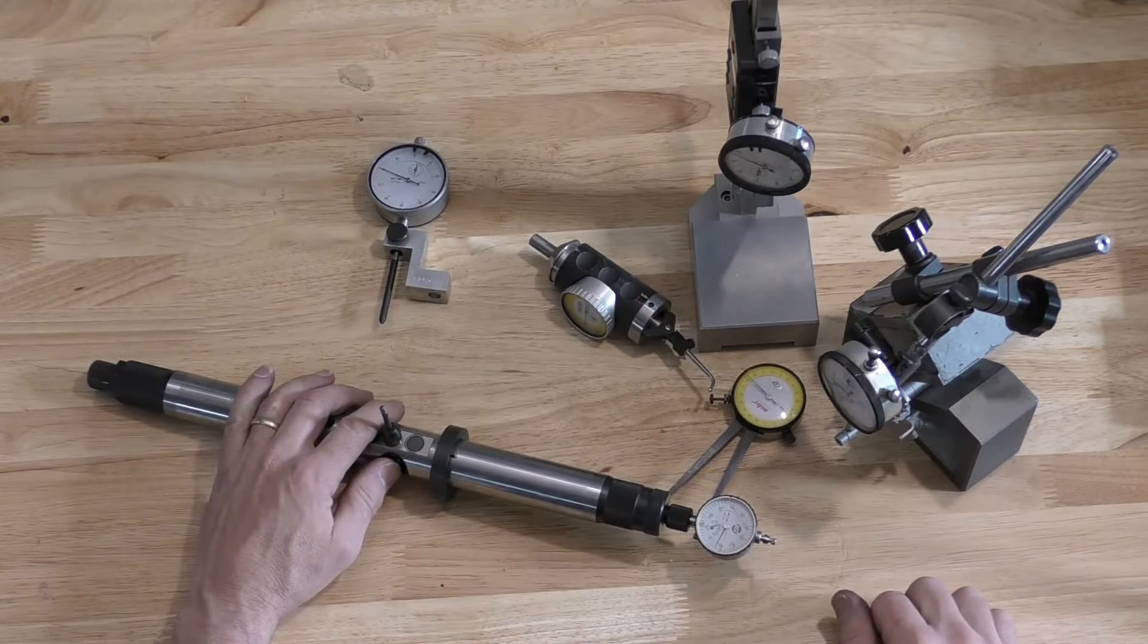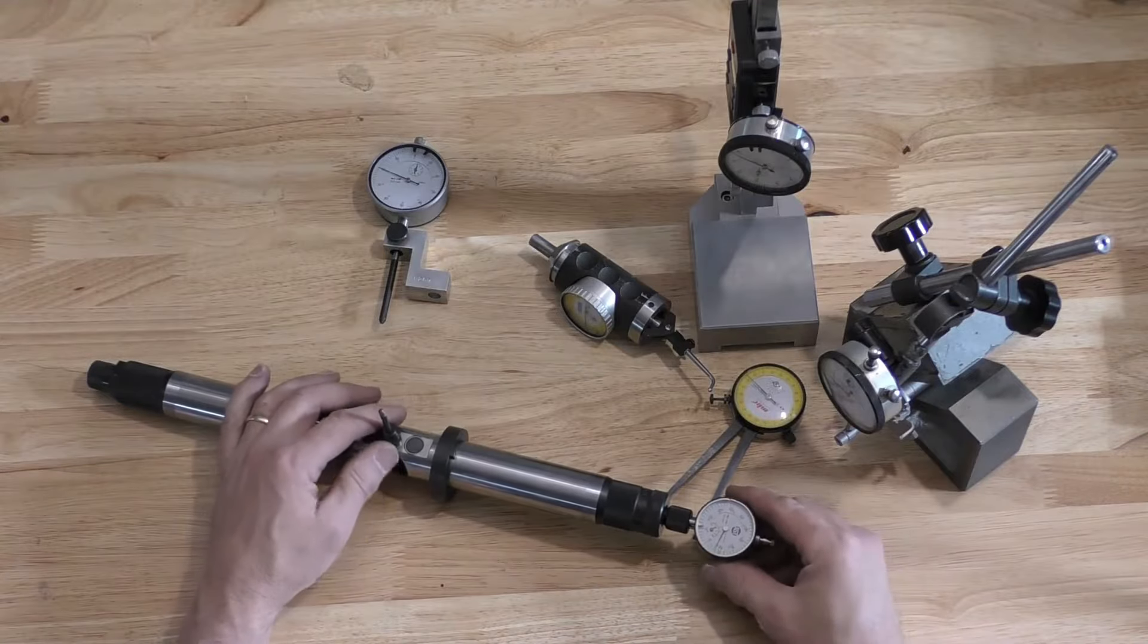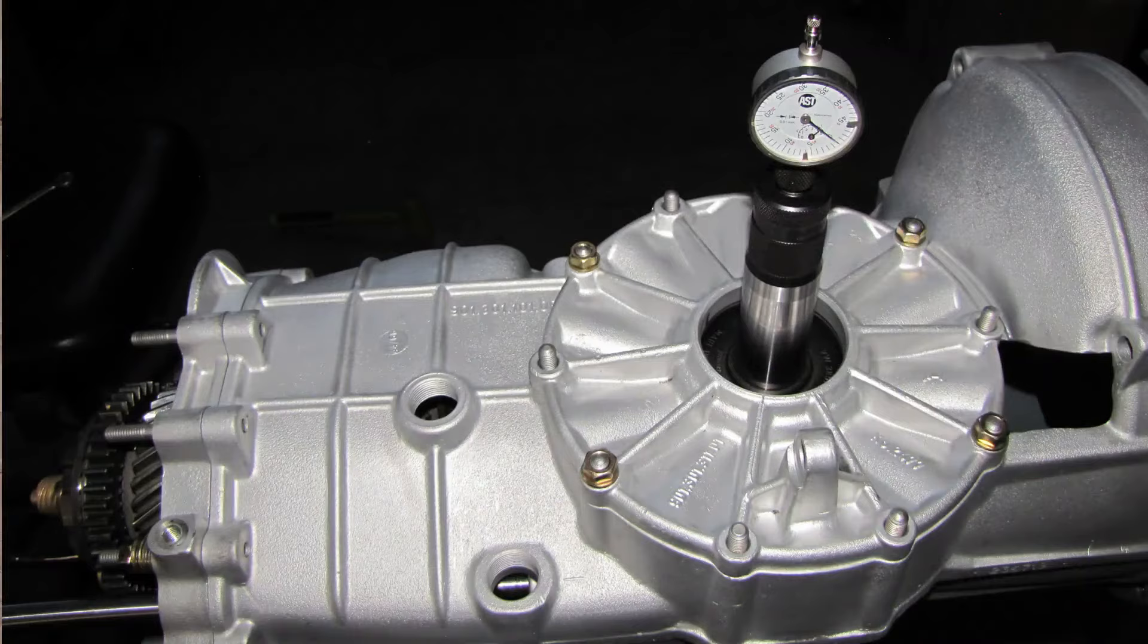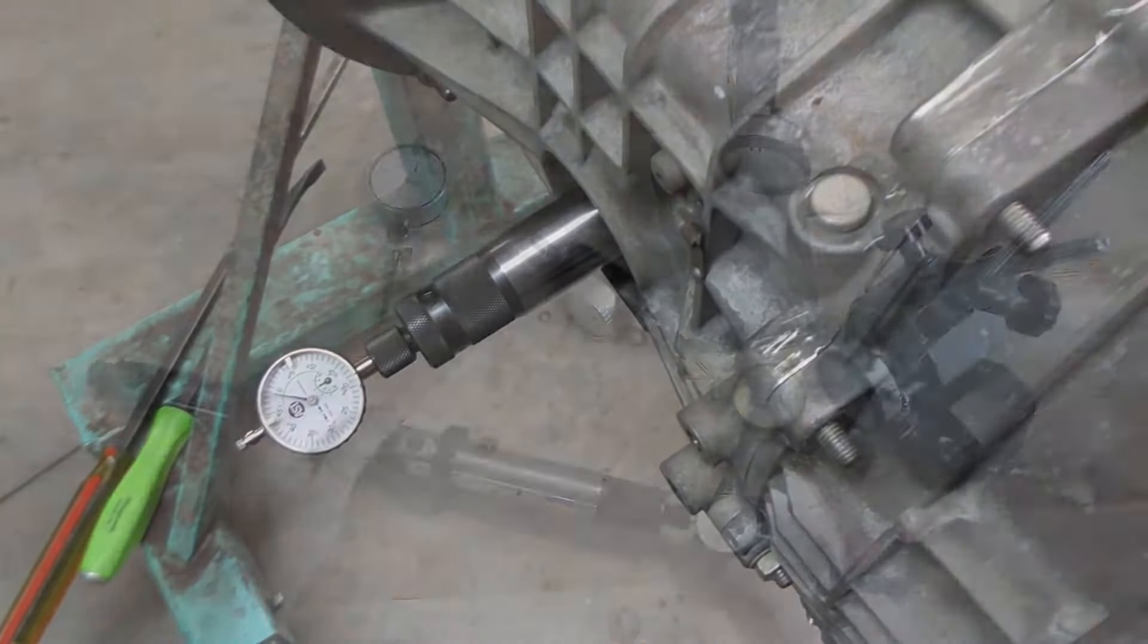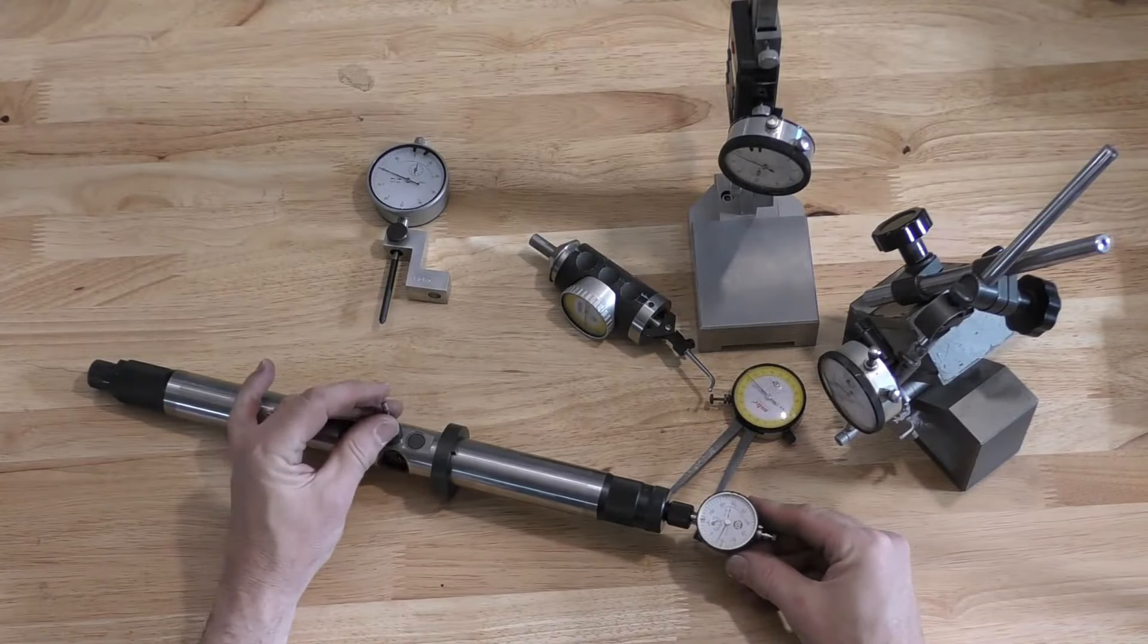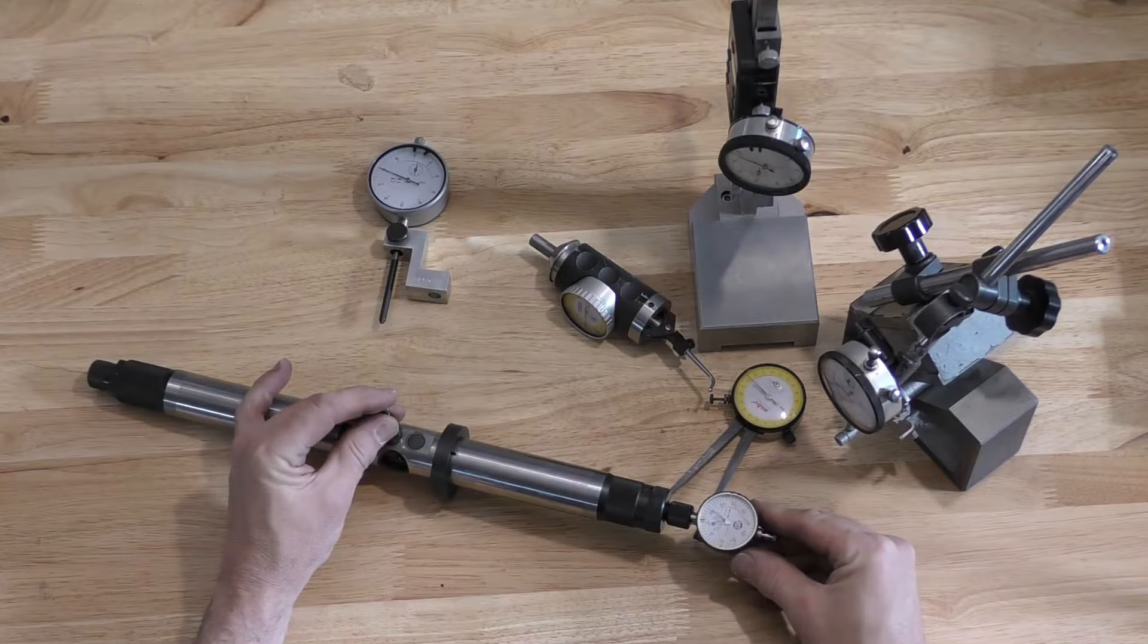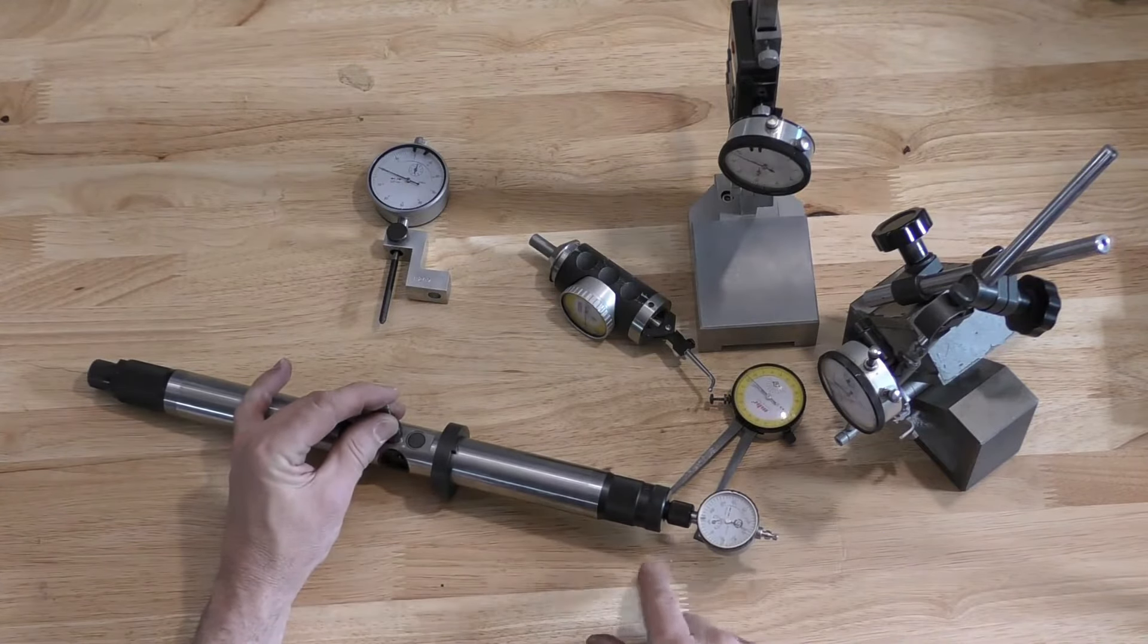Dial gauges are almost always used in conjunction with other tools. In this particular tool we have the differential tool for setting up pinion depths on 901s and 911 transmissions. This one has a needle or a pointer that is going to contact the pinion gear and that translates to a rod inside that pushes on this dial gauge.